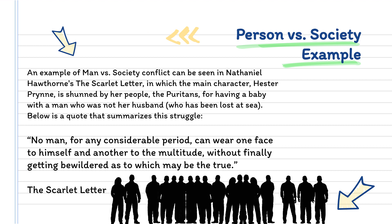Then you have person versus society. An example of person versus society would be seen in Nathaniel Hawthorne's The Scarlet Letter. The main character is shunned by her people — the Puritans, a very religious group — because she had a baby with a man that wasn't her husband. Her husband was lost at sea, so she moved on with her life and had a baby with this man, and the society shunned her for it. This is person versus society because the society does not agree with her and feels she did the wrong thing.